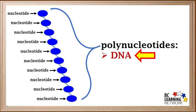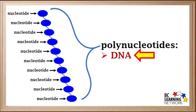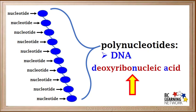Two very important polynucleotides are DNA and RNA. Here we'll concentrate on DNA, which is an abbreviation for deoxyribonucleic acid. Now we'll take a more detailed look at the nucleotides that make up DNA.